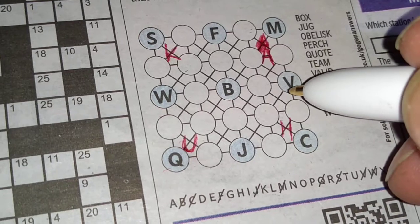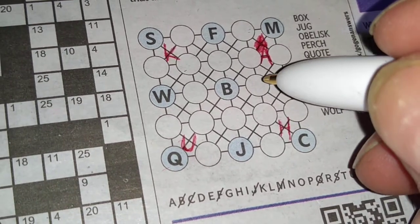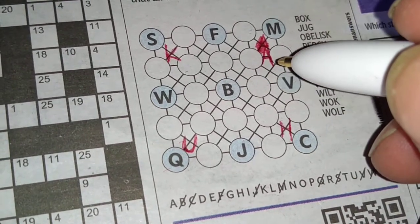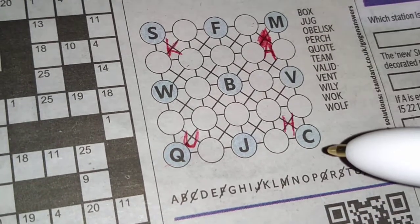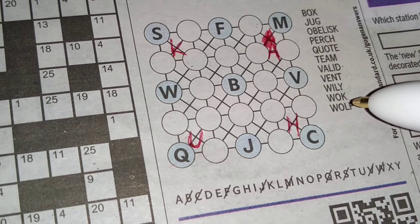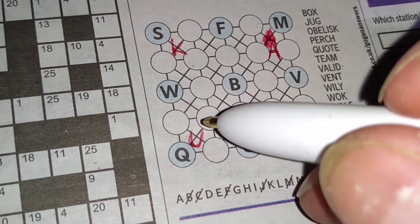Vent. V. And again, thinking about that E, where that's going to be. Then we've got Wiley. Nothing there. Wok.